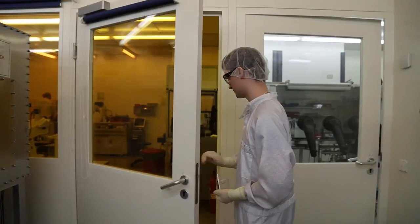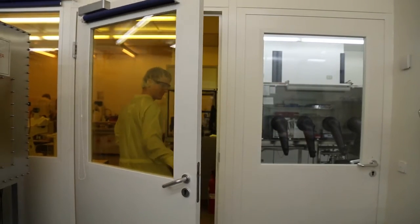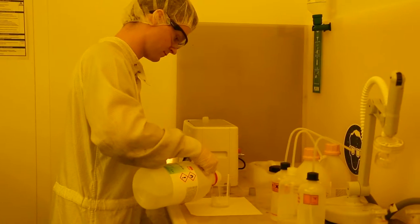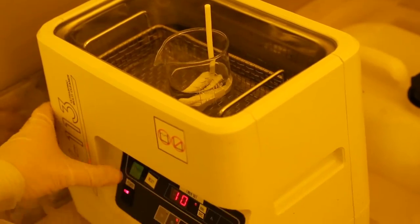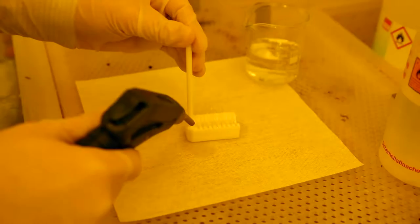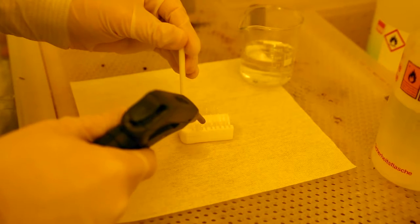When the glass plates have been cut to size, they need to be thoroughly cleaned. For this purpose, they are immersed in acetone and isopropanol and placed in an ultrasonic bath where they are cleaned by means of sound waves. In the next step, the glass plates are blow-dried.